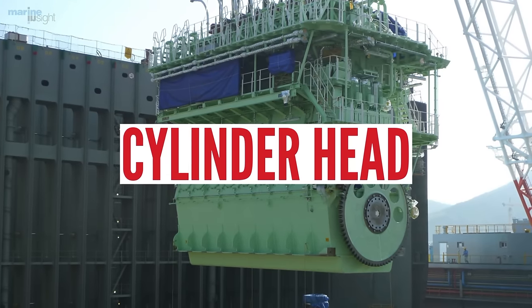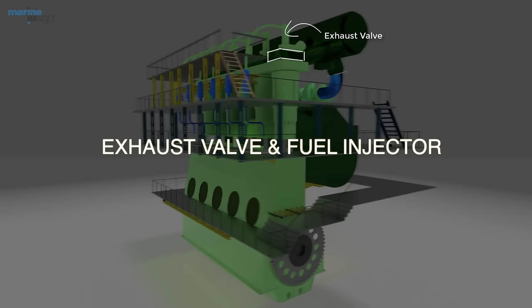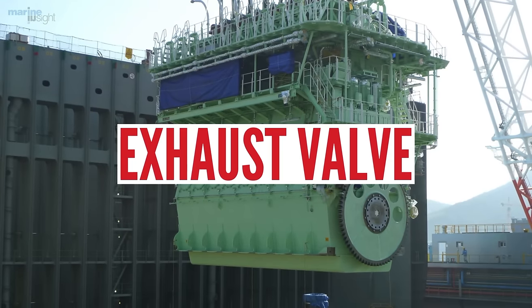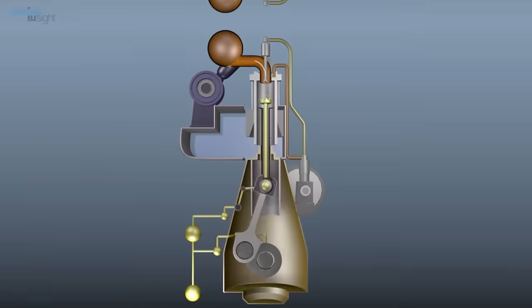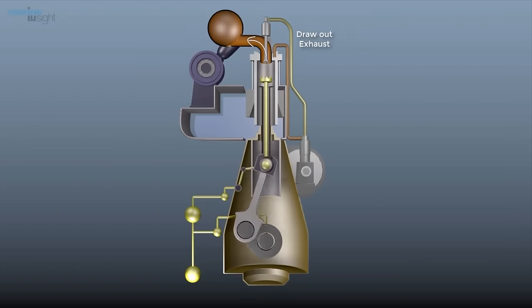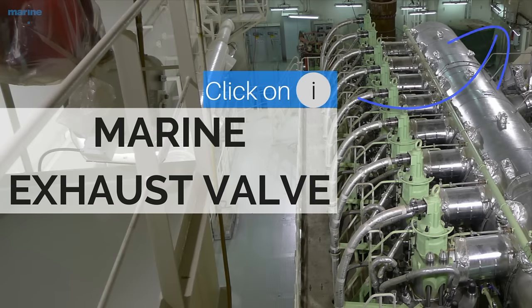Cylinder head: It acts as a lid of the combustion chamber and supports the exhaust valve and fuel injectors necessary for operation. Exhaust valve: The exhaust valve helps to draw out the exhaust gases post the combustion process. Know more about the functioning of marine engine exhaust valve in this video.